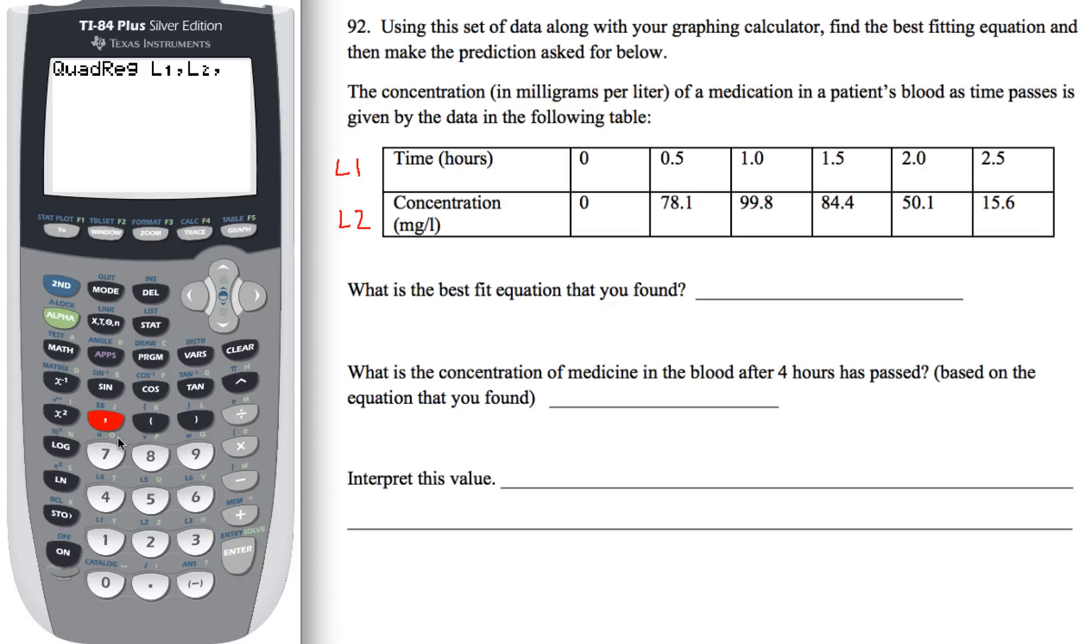To tell the calculator where to put the data, I'm going to use vars, arrow over to yvars, choose number one function by hitting enter, and then just enter again. What that's going to do for us is it's going to take the equation the calculator comes up with and it's going to put that in y equals for us. If we look at y equals, check that out. It put that equation in there for us.